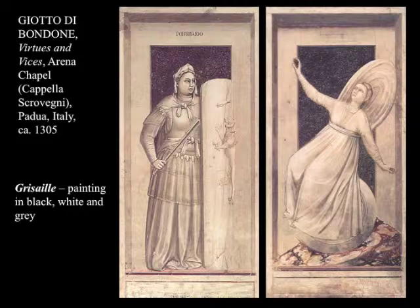Here we see a pair of grisailles — monochromatic images intended almost to reference sculpture — which we find along the base of the Arena Chapel designs. These in particular represent the virtue of fortitude and the vice of inconstancy. These images are intended to convey that virtues lead to heaven and vices lead to hell.